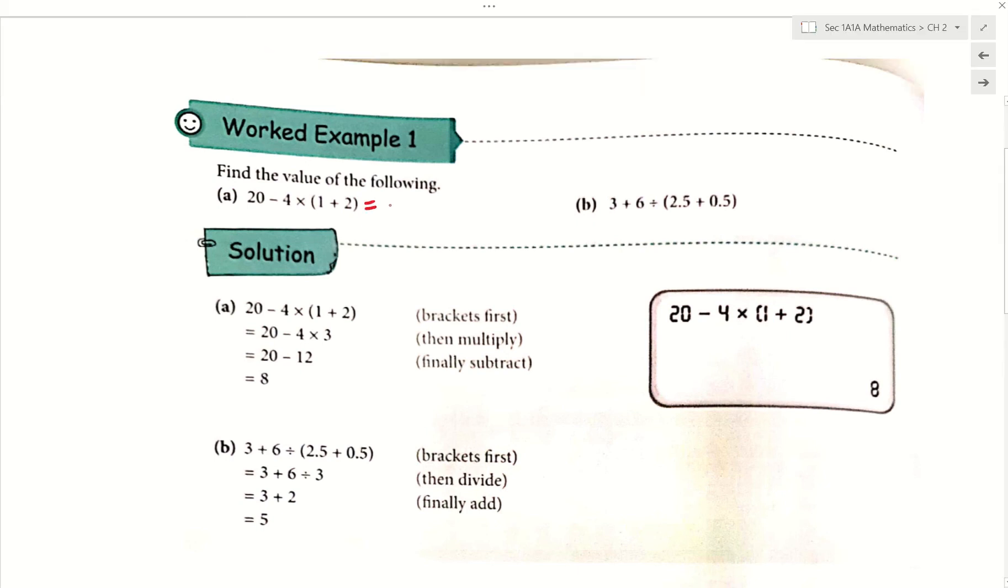So let us do the bracket first. This gives us 20 minus 4 times, what is in the bracket? 1 plus 2, and that is 3. So we have just done the bracket. We replace the 1 plus 2 with 3.